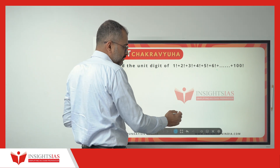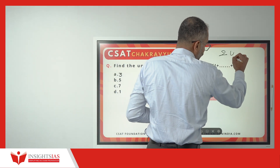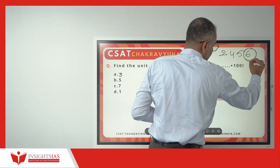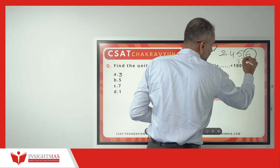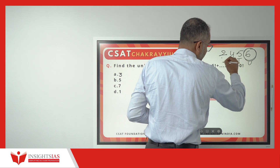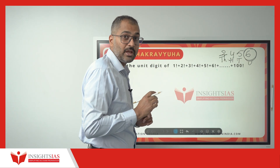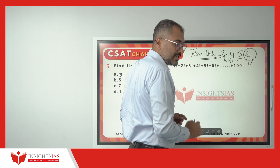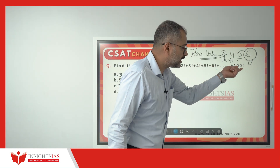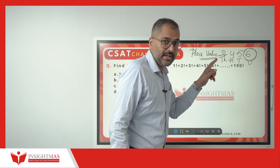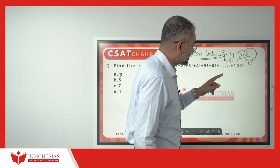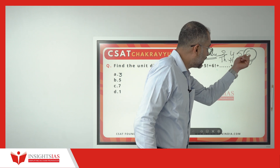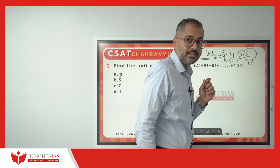Now look here. If your number is 2, 4, 5, 6 — this place is the units place. This is the tens place, this is the hundreds place, this is the thousands place, which is called place value. Similarly, when you add all these numbers, in the sum you are getting, what is the digit at the unit place?